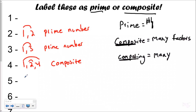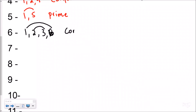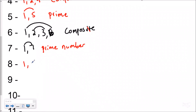Now let's look at five. If I make my factor rainbow for five, I can only do one and five — not very many of these, which means they're important. It is prime time — five is prime. Six has one times six and two times three, so there are four factors, which means it's a composite number — it's working with many different numbers. Seven, when I do my factor rainbow, I only have two factors, so it is a prime number. Eight: I have one times eight, two times four — four factors total — so eight is a composite number.